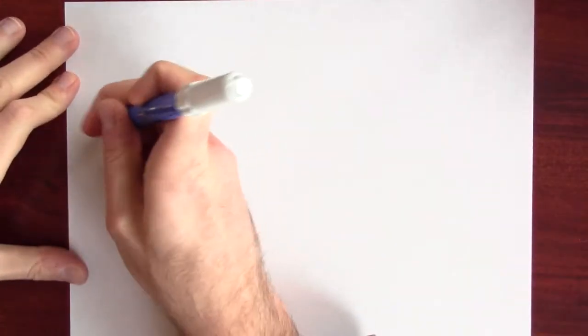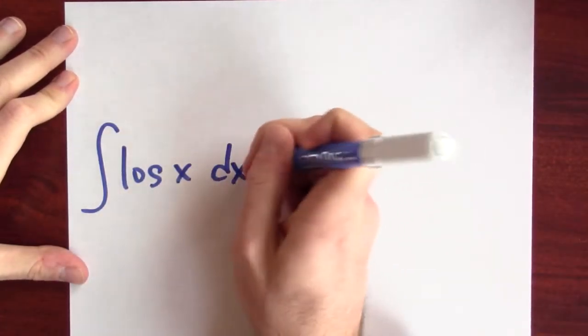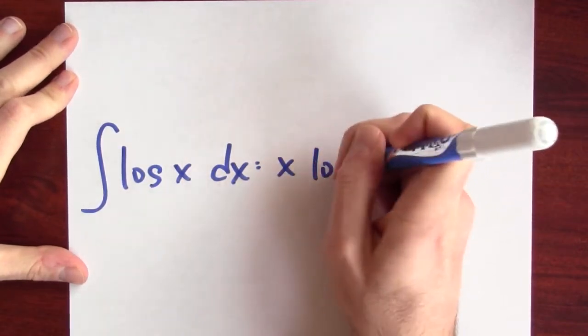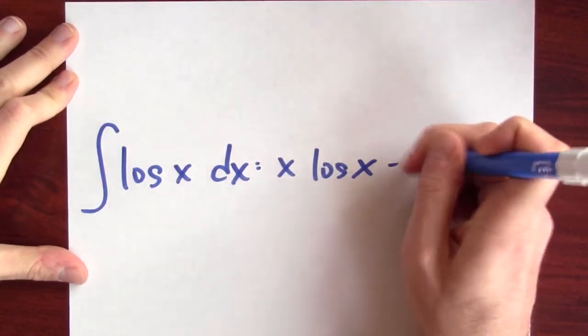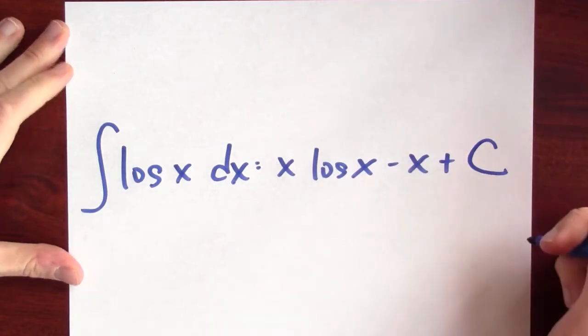In light of that, we can summarize the situation as follows. The anti-derivative of the natural log is x times natural log of x minus x plus some constant c.